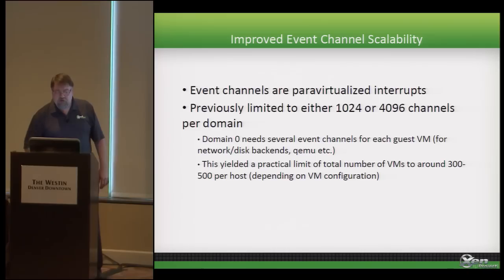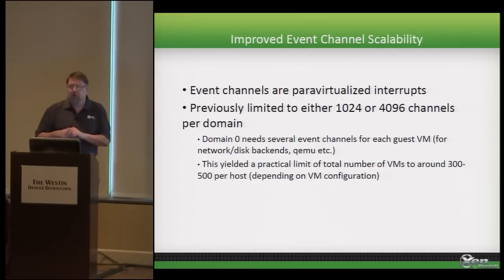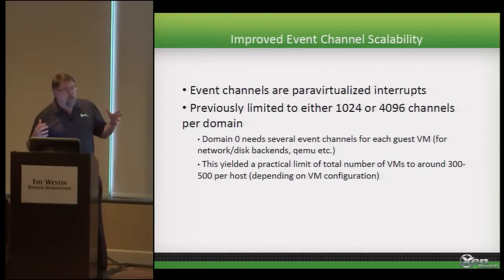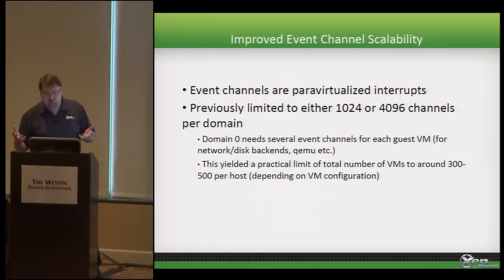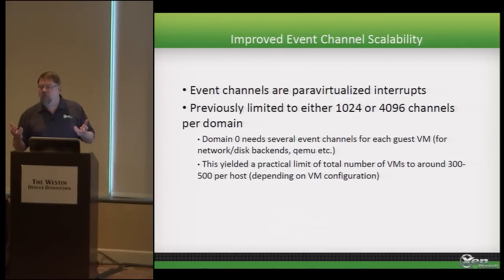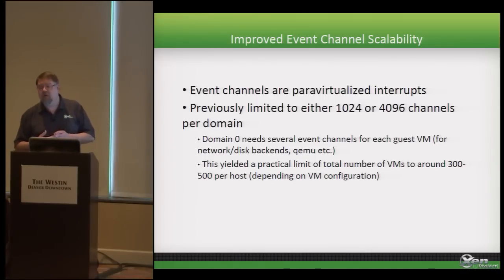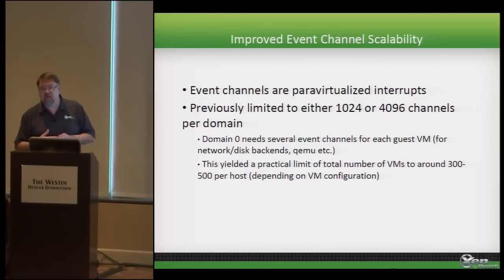On to the meat and potatoes — what's new in 4.4? One of the big things that changed in 4.4 was improved event channel scalability. Event channels are para-virtualized interrupts. Previously we had limits of 1024 or 4096, meaning practically you could get maybe 300 to 500 VMs on a host. A couple of years ago that would have sounded pretty good, but things have changed in the landscape, especially in the last year or so.